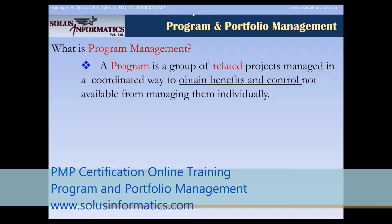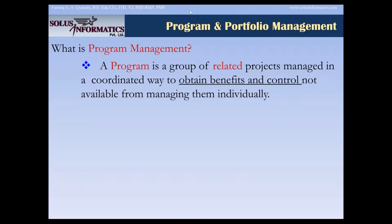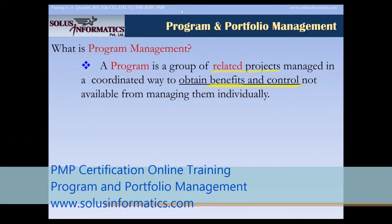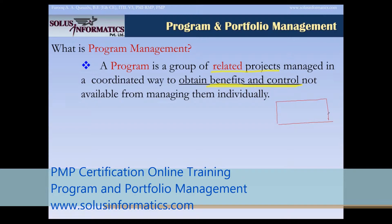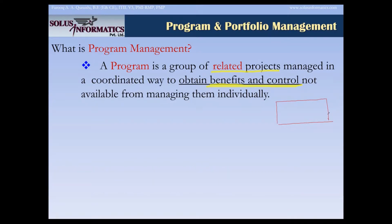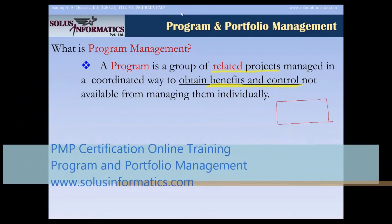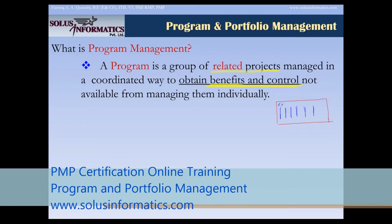A program is a group of related projects — the word 'related' is important. A program is a group of related projects managed in a coordinated way to obtain benefits and control that you would not have got if you had done these projects separately. For example, building an airport would be a program, or the metro rail in Qatar is a program — it would have a group of related projects.